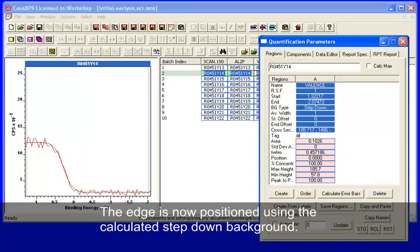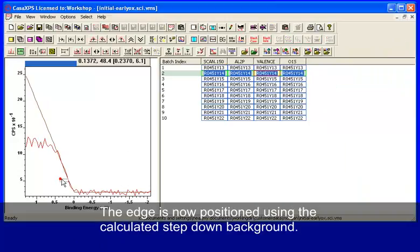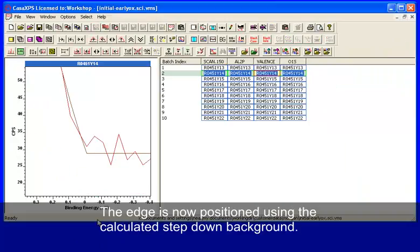You can now see where this Fermi edge has been placed. If we do draw lines again, this should be at zero, and that's confirmation that the calibration has been applied to this Fermi edge.